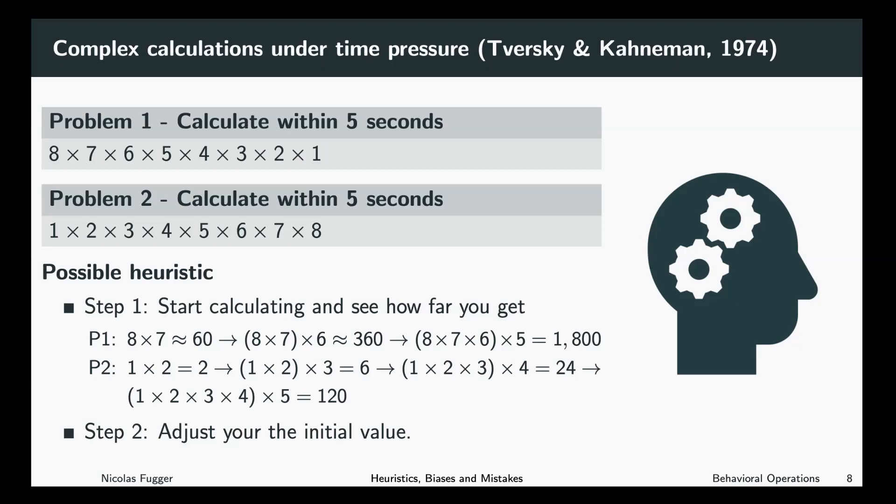Maybe you're also able to do a third step within the five seconds and you multiply the result with five, which would give you 1,800. This is then, let's say, an initial value, your anchor probably for your estimate for the problem solution.